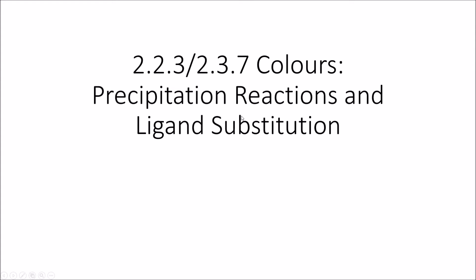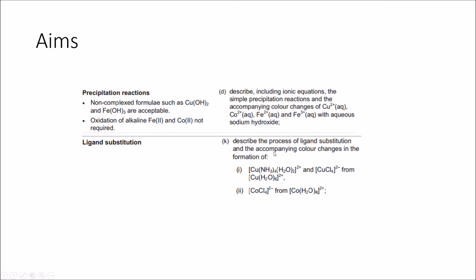Welcome to the F325 topics relating to colours. All the colours you need to know for transition metal ions are in two topic areas: precipitation reactions and ligand substitution. For precipitation reactions, we need to write ionic equations for transition metal ions and their colour changes when reacting with sodium hydroxide. For ligand substitution, we need to describe colour changes when hexa-aqua copper reacts with HCl and ammonia, and when hexa-aqua cobalt reacts with HCl.